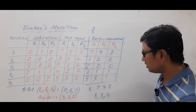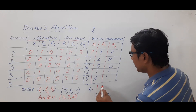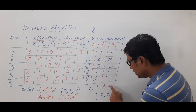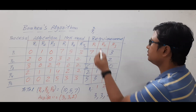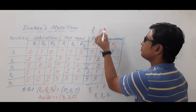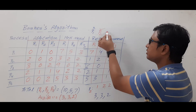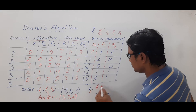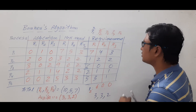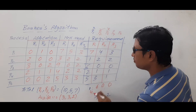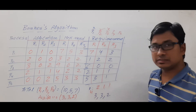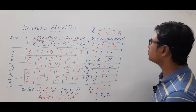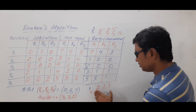Can we satisfy P2? P2 requires 1, 2, 2 and availability is 3, 3, 2 — yes, we can satisfy P2. Can we satisfy P3? P3 requires 6, 0, 0 but availability for R1 is only 3, so we cannot. Can we satisfy P4? P4 requires 2, 1, 1 and availability is 3, 3, 2 — yes, we can satisfy P4.